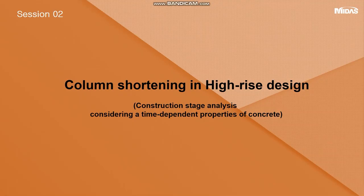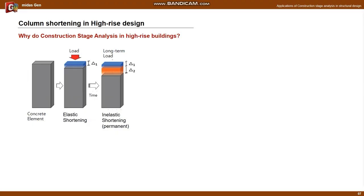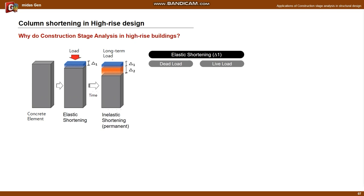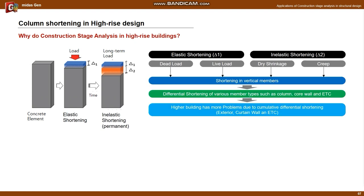The following is about the evaluation of column shortening in high-rise buildings. Column shortening means a technical task that evaluates the vertical deformation of a vertical member in consideration of time-dependent material properties. When an axial force acts on a concrete element for a long time, the element will have elastic shortening by loads and inelastic shortening by non-homogeneous properties of material. Inelastic shortening is due to drying shrinkage and creep, and occurs larger in RC high-rise buildings. Different shortening between vertical members causes a lot of problems in high-rise buildings.